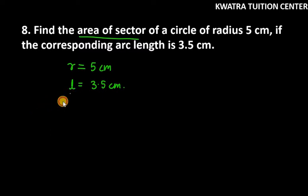So we know that length of arc is defined as theta over 360 into 2 pi R. It equals 3.5. Now we need to simplify it so that we can put the value of theta in the area of sector.